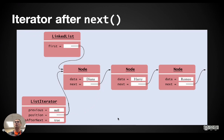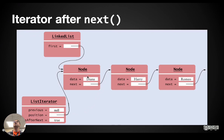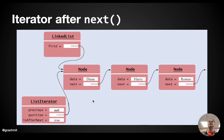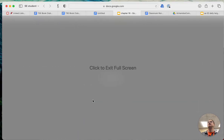We're going to invoke next. When we have a brand new list iterator and we call next, it should return the first element — Diana. Position should refer to the node whose element we just returned, so position needs to refer to the first node. Previous stays null because we've only called next once — there is no second-to-last node to refer to. And since we just called next, isAfterNext will be set to true. So we're going to work on writing and implementing the next method.